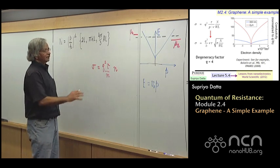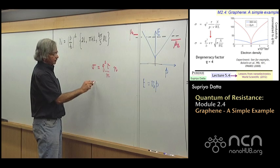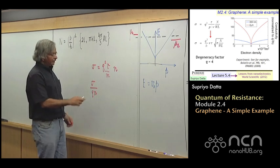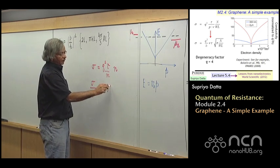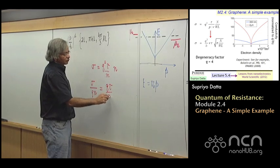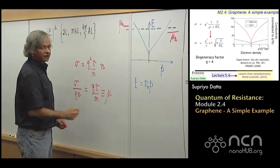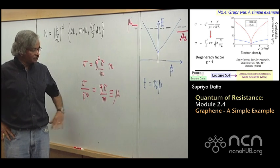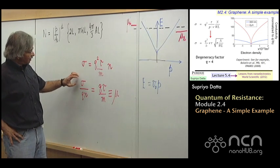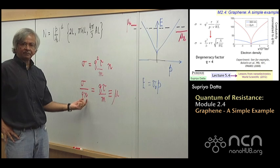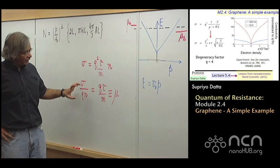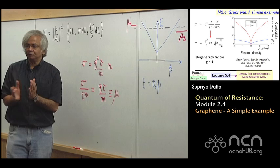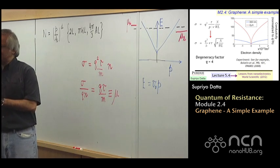Namely, that sigma is equal to q squared tau over m times the density of electrons, that is number of electrons per unit length if it's one dimension, per unit area if it's two dimensions, per unit volume if it's three dimensions. So this is the formula that you kind of carry in your head. And often people take the conductivity and divide it by the carrier density, this electron density, and then the quantity you get, that's what you usually call the mobility.